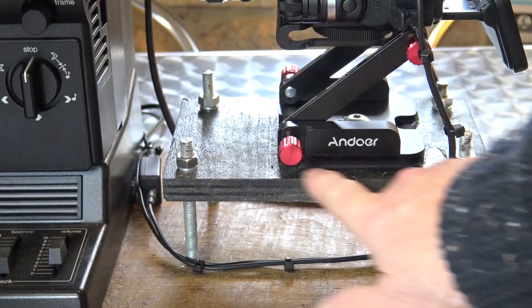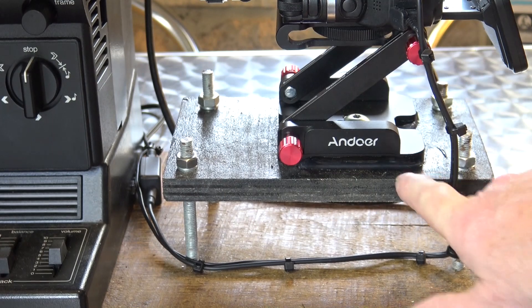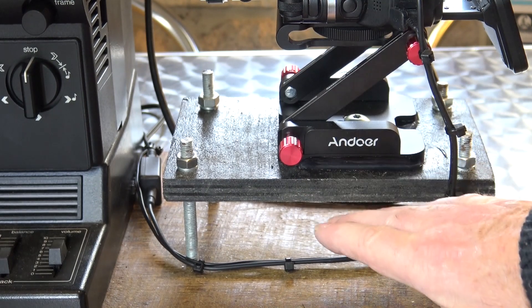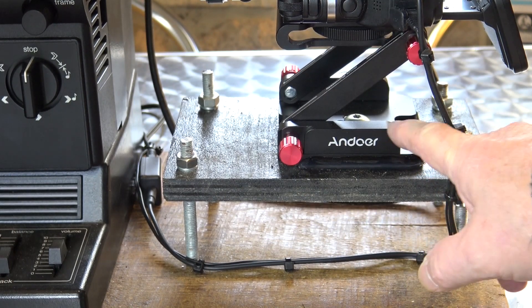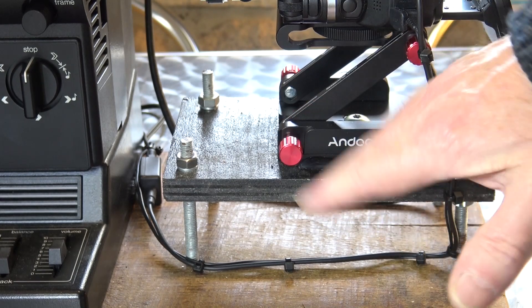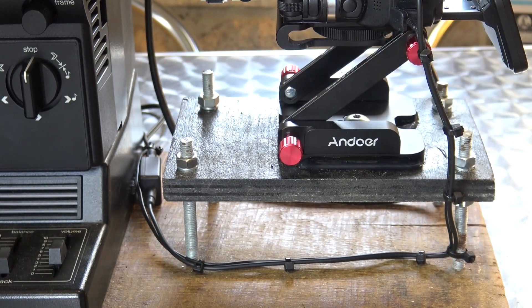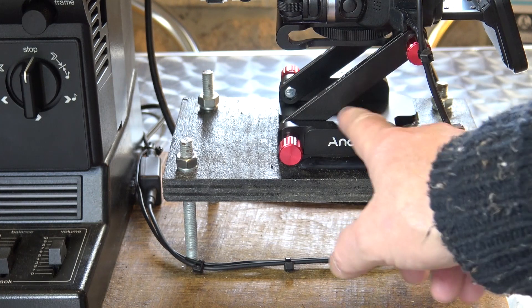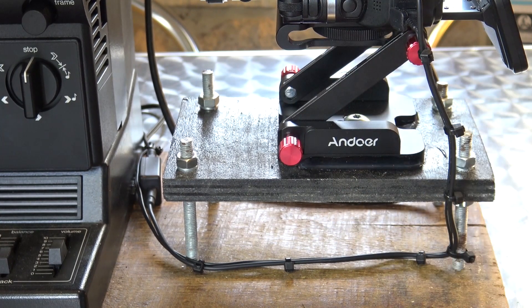I built this adjustable platform that goes up and down, this is just wood. And then I found this on Amazon, which you can adjust that way. I think this was about 20 euros, this adjustable camera bracket.